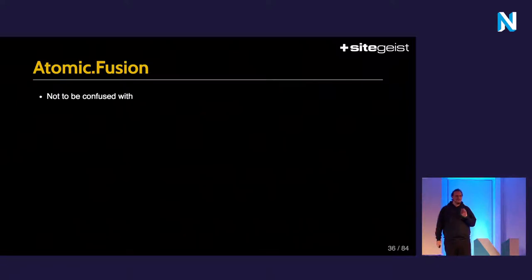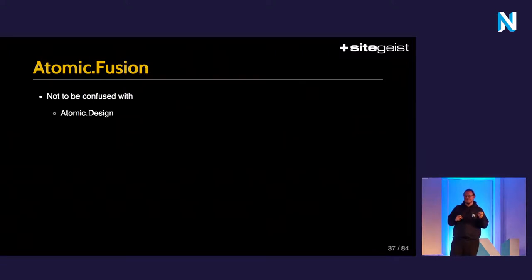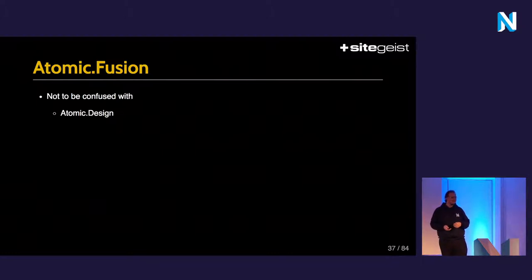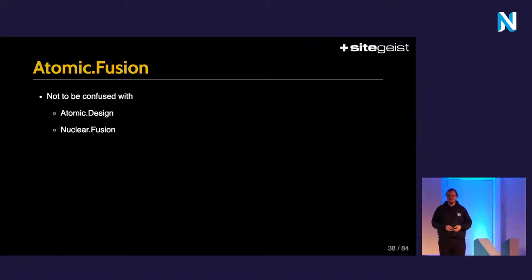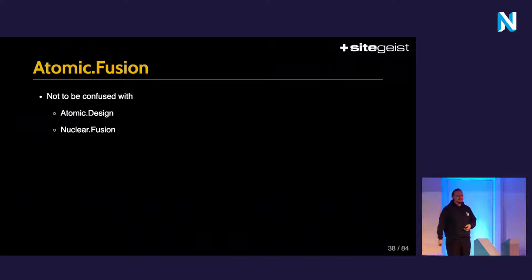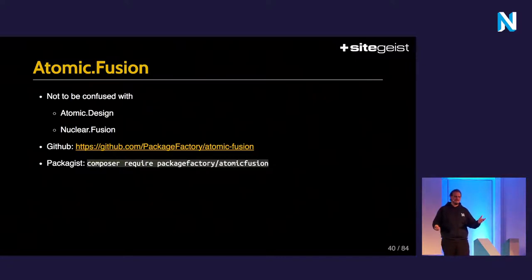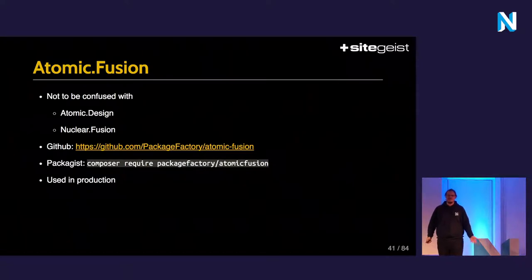Atomic Fusion should not be confused with atomic design. Atomic design is more of a design principle; you can use Atomic Fusion to implement atomic design, and we do use it in some projects, but you are not bound to do that. Atomic Fusion can also not be confused with nuclear fusion, because Atomic Fusion can be used today — nuclear fusion probably in some obscure utopian future. It is available on GitHub, installable via Packagist. It is very small with a very stable API, very unlikely to change. We use it successfully in production in basically all of our projects today.